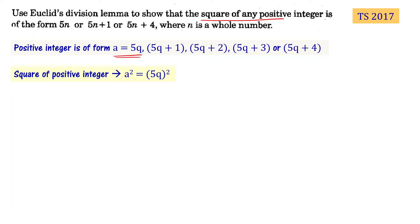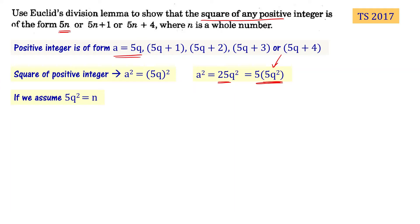a squared equals 25q squared, which I can write as 5 times 5q squared. Now looking at this: if I compare with 5n, I can assume n equals 5q squared, which is a whole number since q is a positive coefficient. Therefore, a squared equals 5 times n, which is of the form 5n.